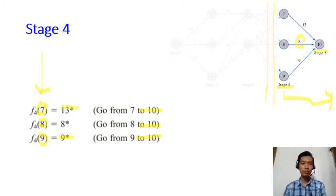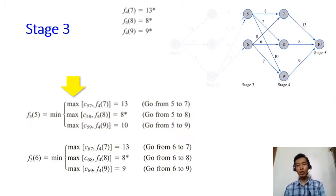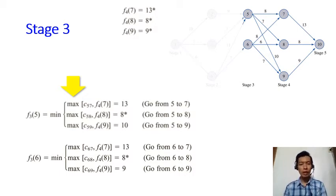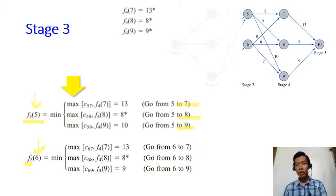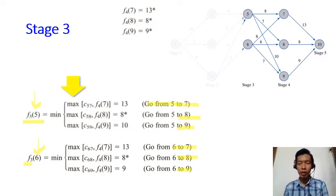We go one step backward to stage 3. At stage 3, we don't know yet whether we'll be at city 5 or city 6. If we wake up at day 3 at city 5, we have three possible options: go to 7, go to 8, or go to 9. Similarly, if we wake up at city 6, we also have three options: go to 7, go to 8, or go to 9.